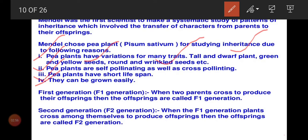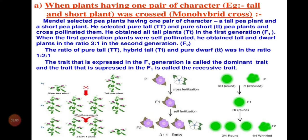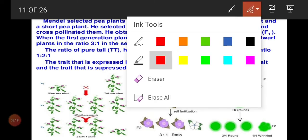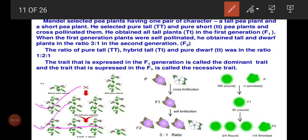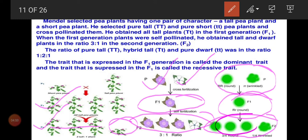Last class we learned about the monohybrid cross. 'Mono' means single, 'hybrid' means crossing — so he crossed plants possessing a single character. He got in F1 generation all tall plants, and in F2 generation three tall to one dwarf. When he crossed violet flower with white flower, violet is dominant and white is recessive. F1 generation gave only violet flowers; F2 generation gave a ratio of three violet to one white. Similarly for round and wrinkled seeds — round is dominant, wrinkled is recessive — F1 gave round seeds and F2 gave three round to one wrinkled.